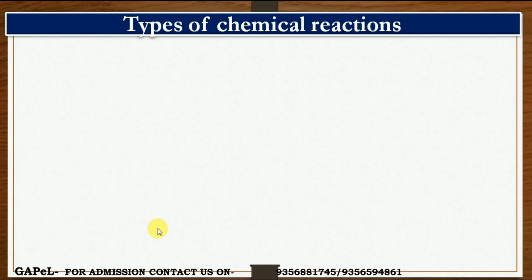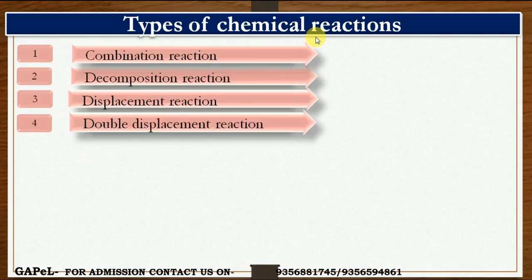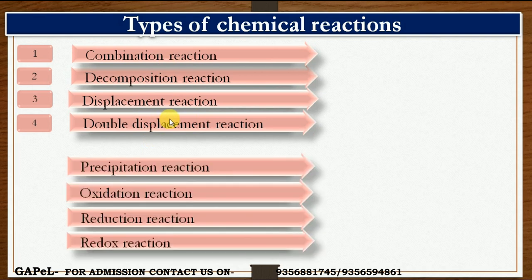What is a chemical reaction? How do we know chemical reactions? We will also learn about different types: combination reaction, decomposition reaction, displacement reaction, double displacement reaction, precipitation reaction, oxidation reaction, reduction reaction, and redox reaction.